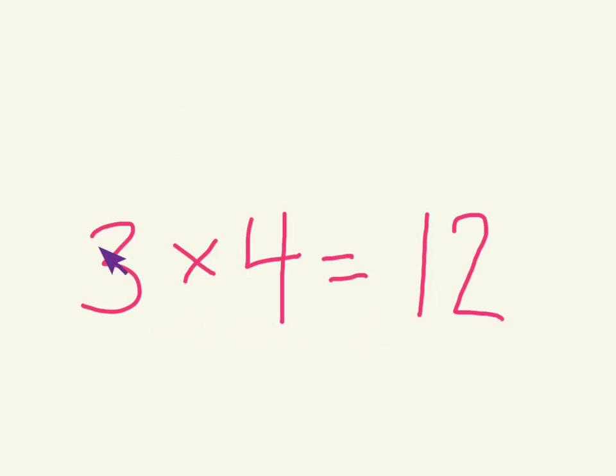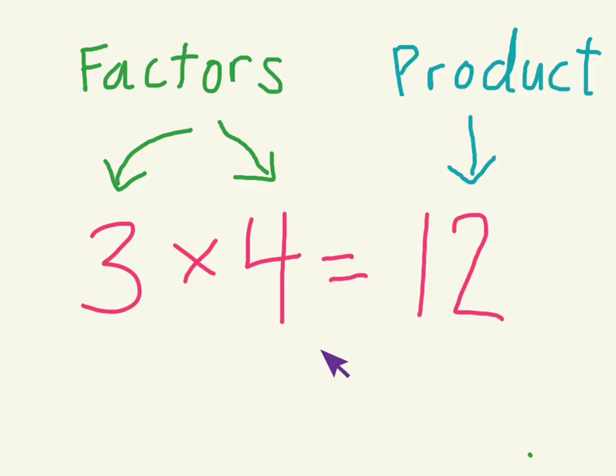These two numbers have a special name - they're called the factors. And when you multiply two factors together, what you get over here is called the product. So in this equation, 3 and 4 are the factors and 12 is the product.